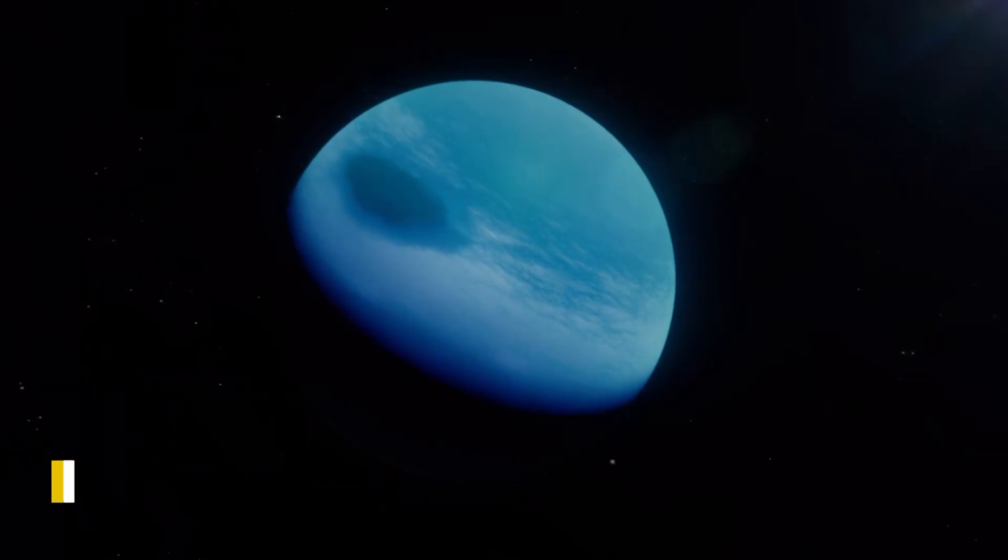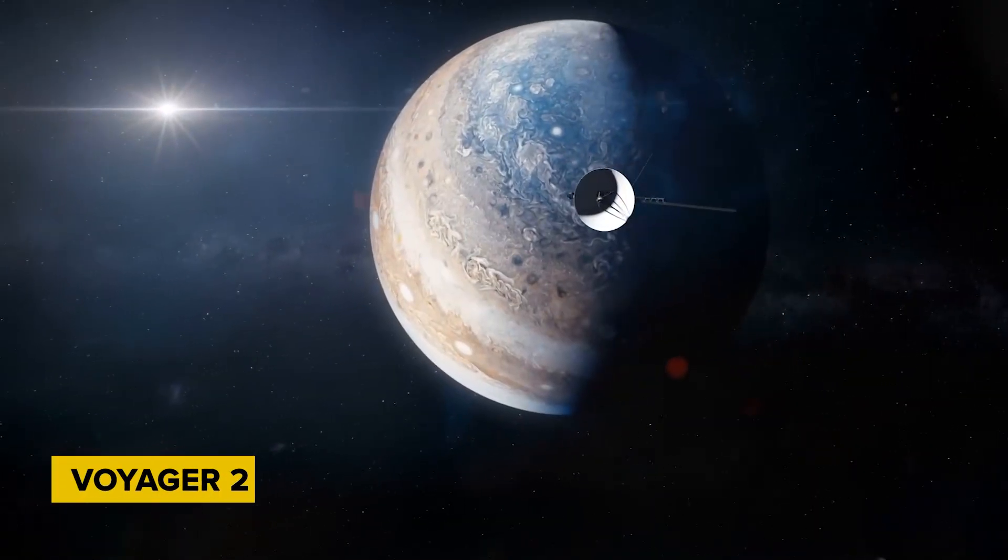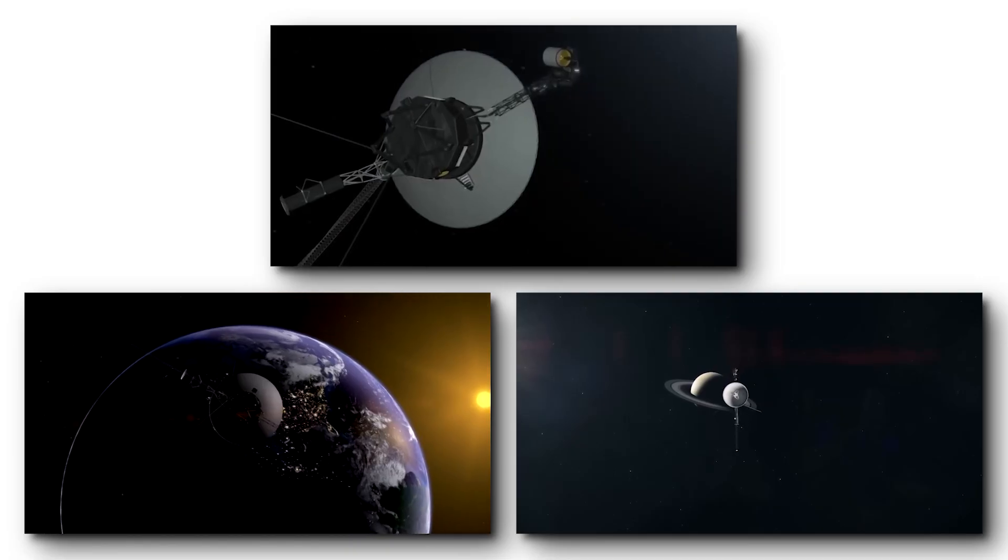In the cold, dark expanse beyond Neptune, more than 12 billion miles from Earth, Voyager 2 is still sending signals - faint, slow, but astonishing in what they carry.